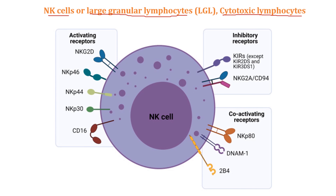This is the structure of NK cells, having the activating receptor, inhibitory receptor, and co-activating receptor. Natural killer cells are the type of immune cells that play a vital role in the innate immune system. They are one type of particular lymphocytes, also a type of white blood cell, and are part of the body's first line of defense against infection and cancerous cells.